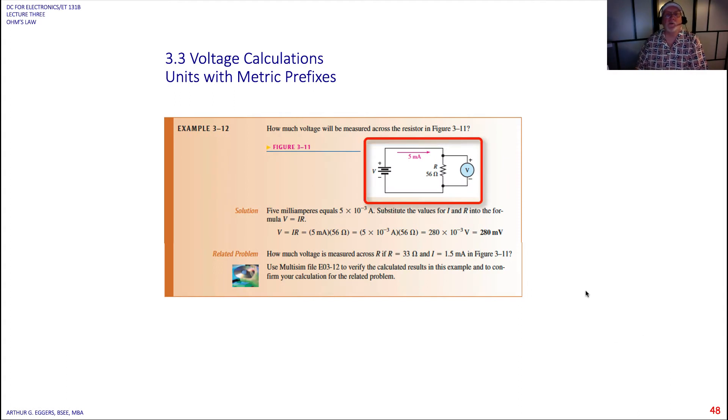How much voltage will be measured across the resistor? Notice the term, the word across. We didn't take the resistor out like we would do if we needed to measure the resistor by itself. I'm going to put a voltmeter across the resistor and I want to measure how much voltage is going to be across this 56 ohm resistor given I have 5 milliamps of current being pushed through it.